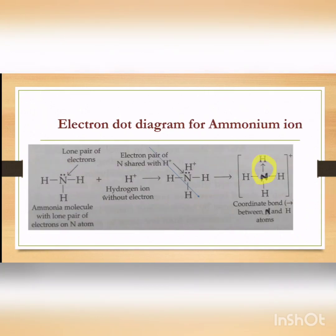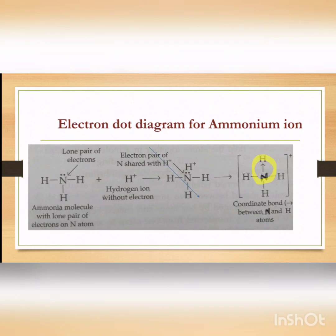Now let us see the electron dot diagram for the ammonium ion. NH₃ has a lone pair of electrons. It adds up with a hydrogen ion that has no electrons. The lone pair of electrons is shared between nitrogen and hydrogen, and since hydrogen has a positive charge, the final structure shows an arrow mark from nitrogen towards hydrogen. The whole structure needs to be shown in a square bracket with a positive charge on top. Both these electron dot diagrams are very important from an exam point of view, so practice drawing the structures for the ammonium ion and the hydronium ion.